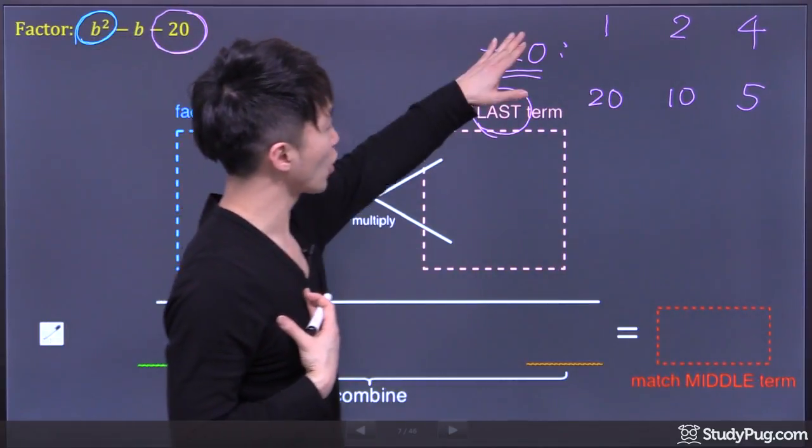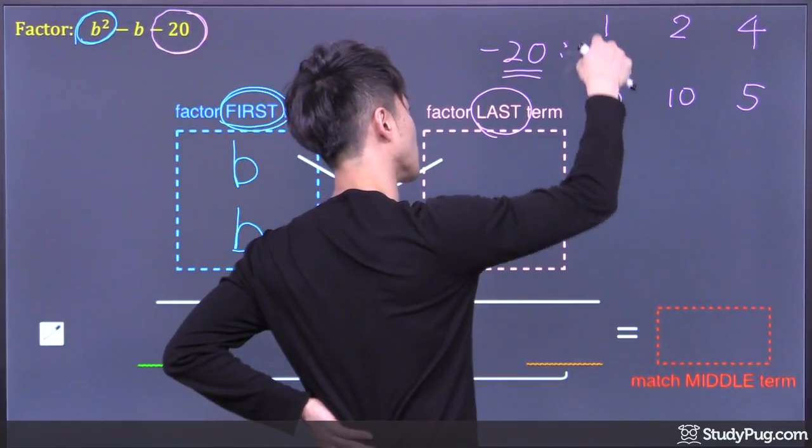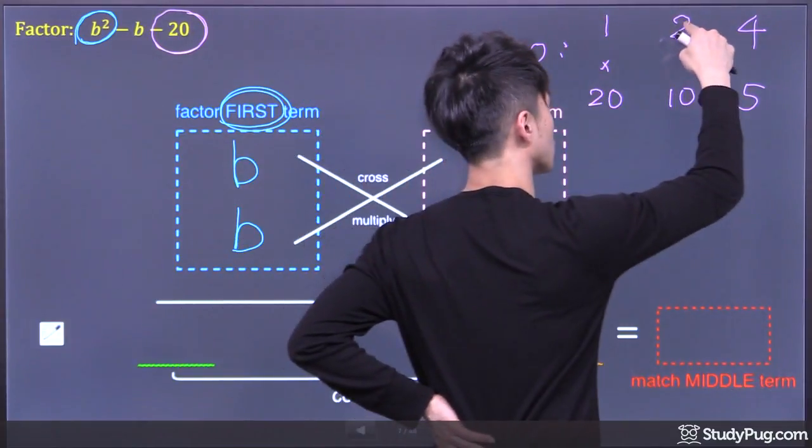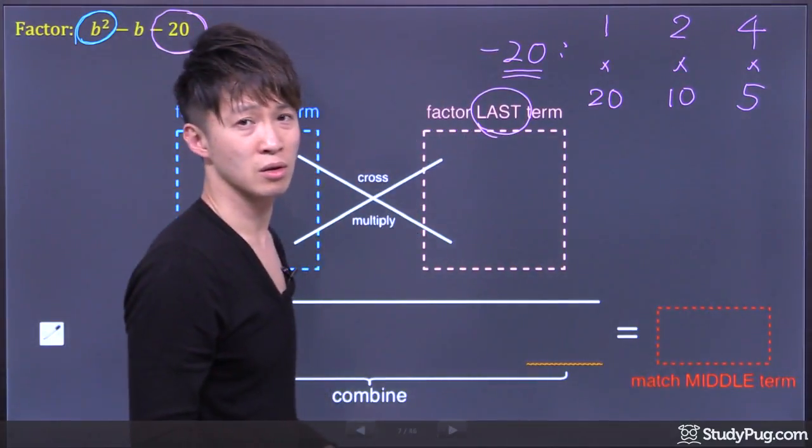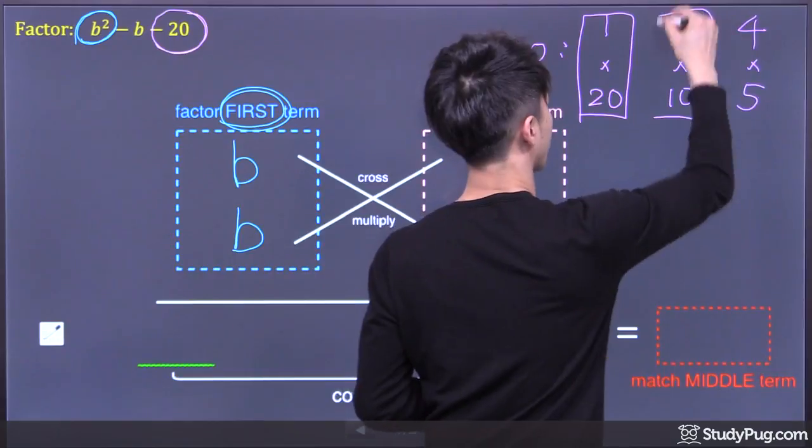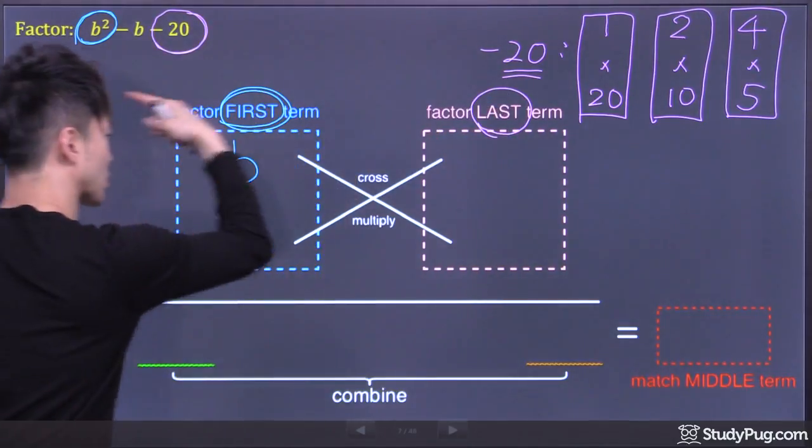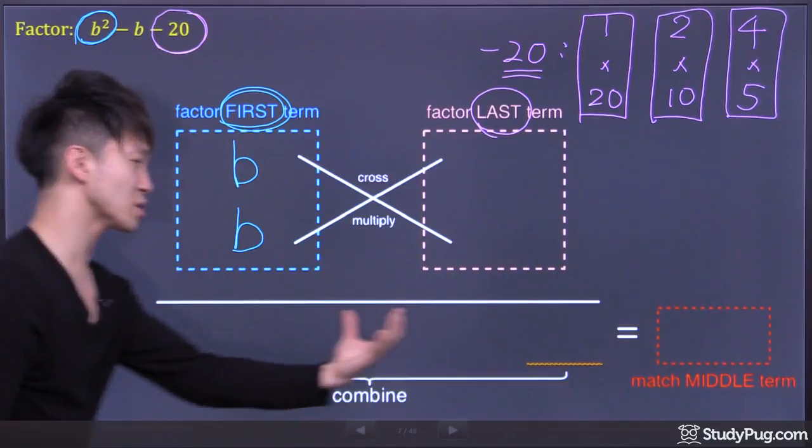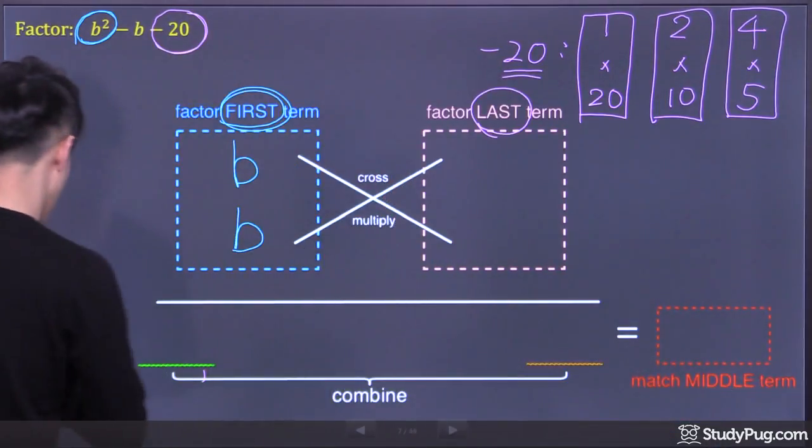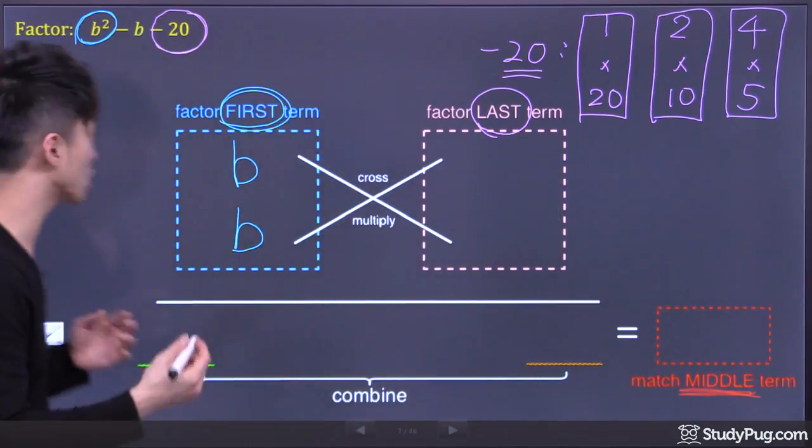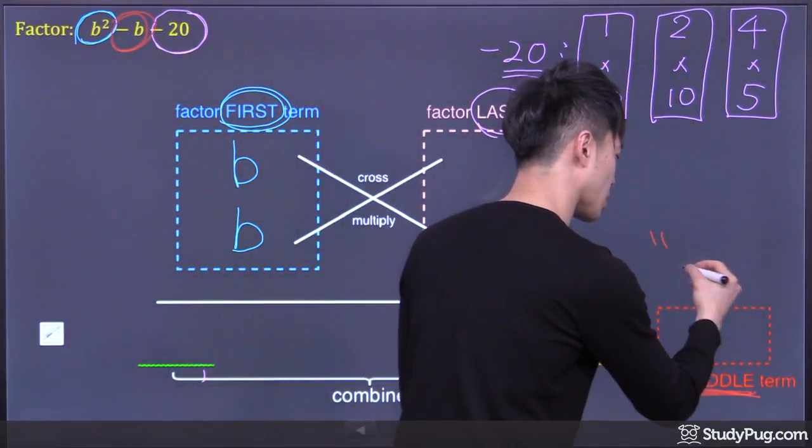So it looks like we can factor 20 into three sets of numbers. For example, 20 can be factored into 1 times 20, 2 times 10, and 4 times 5. So which set of factoring here should we choose? After we cross multiply, we get two terms. Combine them. The result here must match the middle term. The middle term in this case is negative b. So whatever we come up with here, we're trying to match that with negative b.